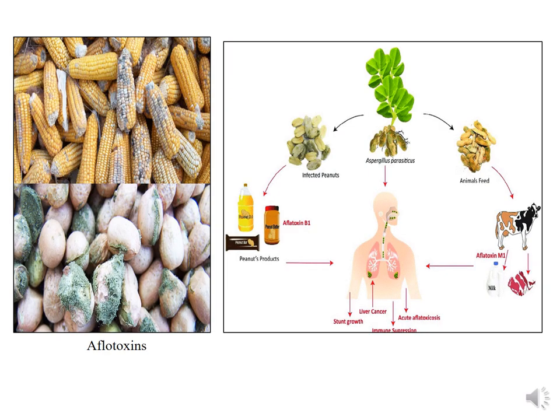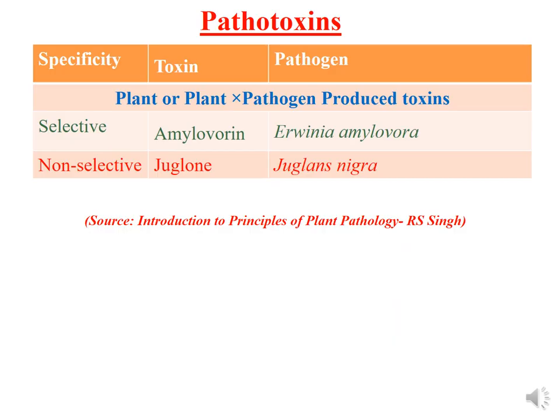Aflatoxins are produced by Aspergillus flavus. If those toxins enter into food byproducts and humans consume them, they cause diseases like liver cancer, acute aflatoxicosis, and stunted growth. Toxins enter into the food system. Other toxins produced during plant-pathogen interactions include the selective toxin amylovorin produced by Erwinia amylovora, which causes fire blight of apple, and the non-selective toxin juglone from Juglans nigra. This list of toxins was collected from the book Introduction to Principles of Plant Pathology by R.S. Singh — please refer to it for detailed information on the mode of action of each toxin.